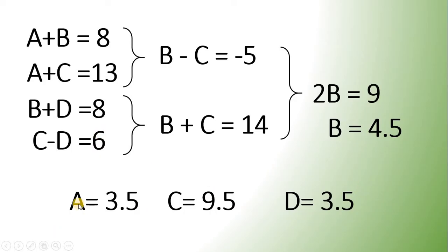Therefore, we have A equals 3.5, B equals 4.5, C equals 9.5, and D equals 3.5. Now, let's see if those numbers are correct.